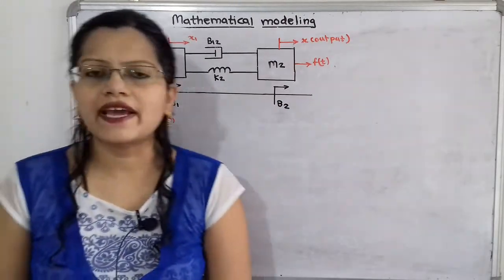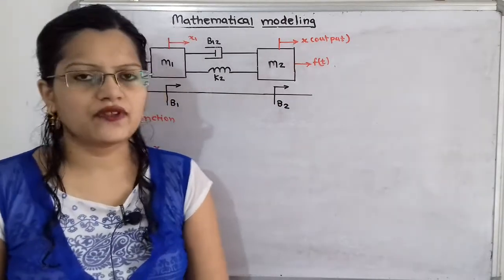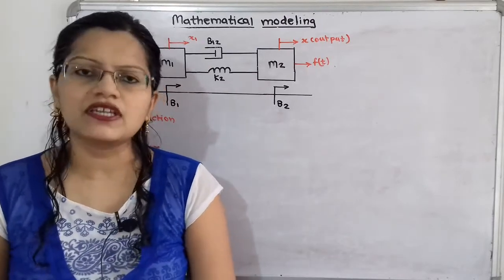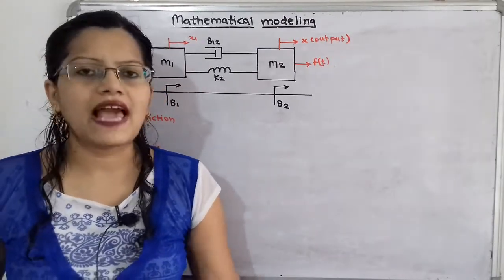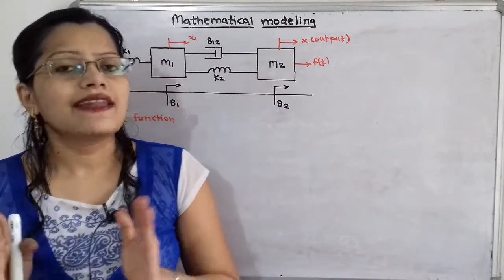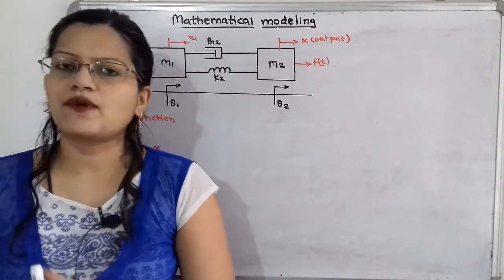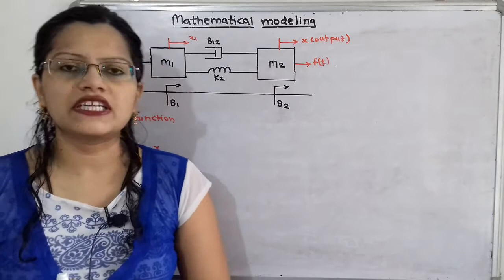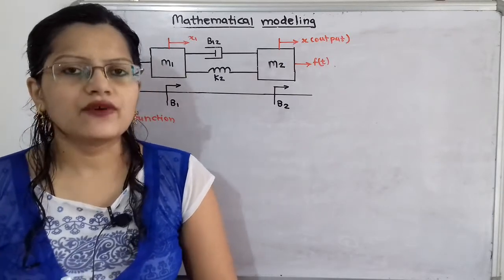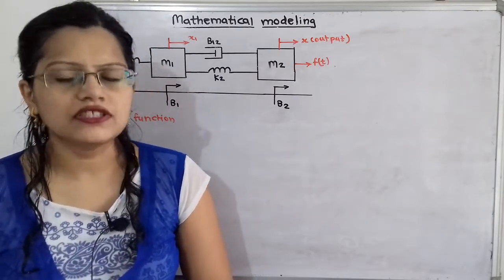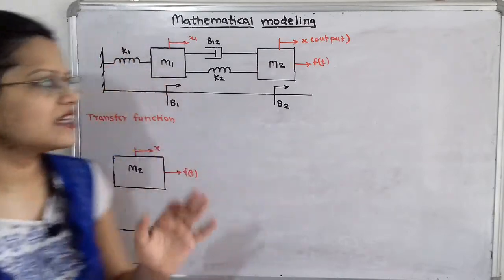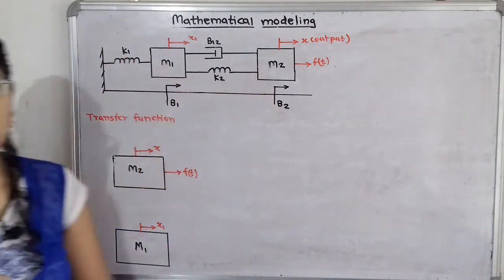Now we have to find the transfer function. The transfer function is the ratio of the Laplace transform of output to the Laplace transform of input with zero initial conditions. For that, we first need to find the differential equations for mass M2 and M1.